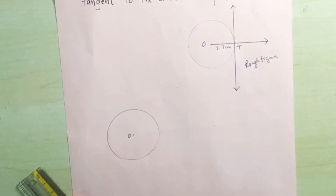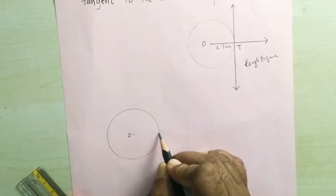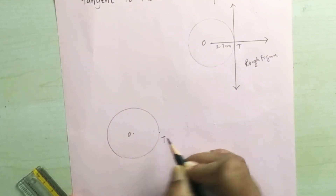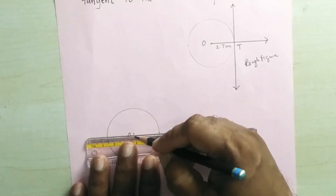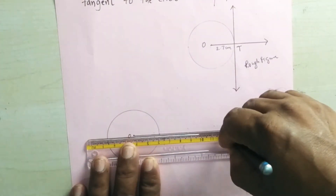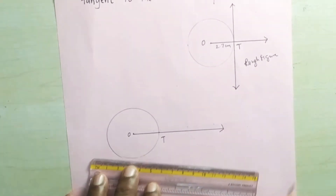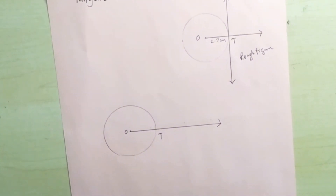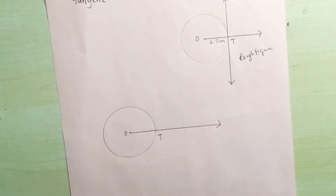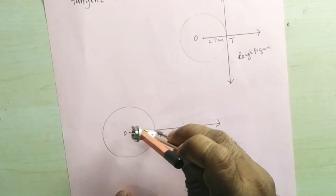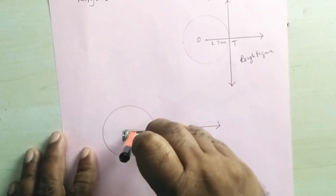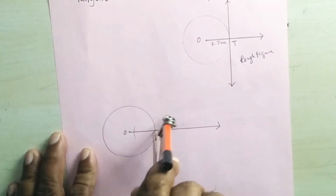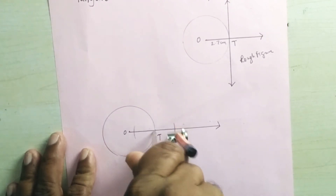Now take a point T on the circle — any point — and draw a ray from the center passing through T. Now we will draw the tangent passing through point T. With the help of the compass, place the pointer at point T and draw one arc on the left of point T cutting the ray OT, and one on the right-hand side.